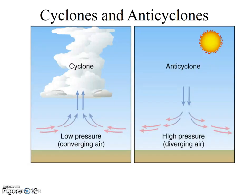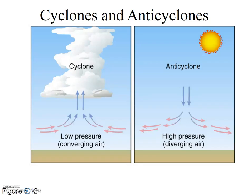Next we're going to add one more component to our model — the vertical component within the center of the pressure cells. First let's consider the high-pressure system, the anticyclonic system. The air at the surface is diverging, but where does this diverging air come from? Air is entering from the center above. Thus the vertical movement in the center of an anticyclone is downward. In the center of any pressure cell, high or low, there is very little horizontal air movement. The primary motion in the center is down for anticyclones. The cool air is descending in the middle and then diverging outward at the surface.